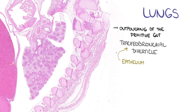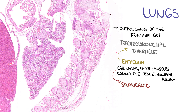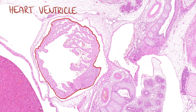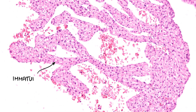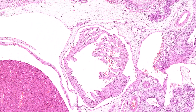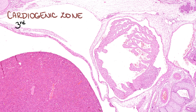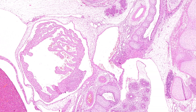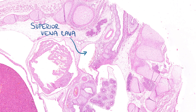The epithelium is derived from this endodermal diverticle, while other structures of the wall such as cartilage, smooth muscles, connective tissue, and visceral pleura are derived from splanchnic mesoderm. Close to the lungs, we can find the section through the heart ventricle. Its wall and trabeculae are formed by immature cardiomyocytes that are already capable of contraction. The heart begins to develop as one of the first organs in the cardiogenic zone during the third week. By this time, the formation of the interventricular septum and outflow tract should be completed and the heart should pump blood to the body. There are visible large vessels around the heart, such as the superior vena cava and the aortic arch.